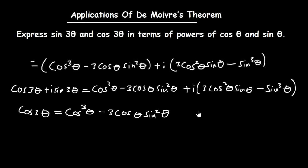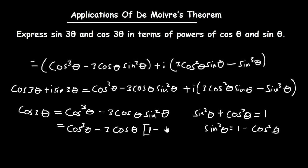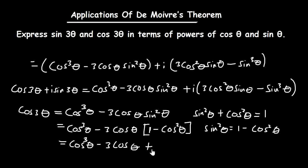Since sine squared theta plus cos squared theta equals 1, we have sine squared theta equals 1 minus cos squared theta. Substituting, cos 3 theta equals cos cubed theta minus 3 cos theta times (1 minus cos squared theta), which simplifies to cos cubed theta minus 3 cos theta plus 3 cos cubed theta, giving us 4 cos cubed theta minus 3 cos theta.